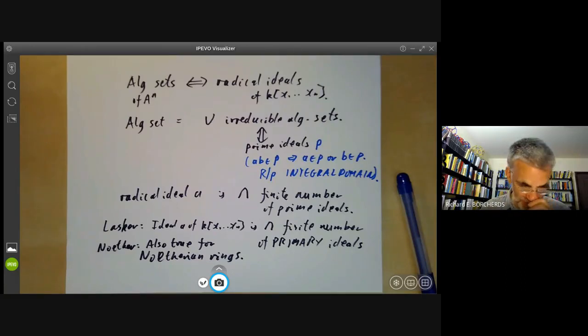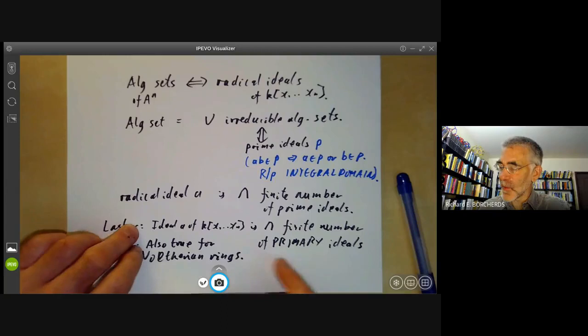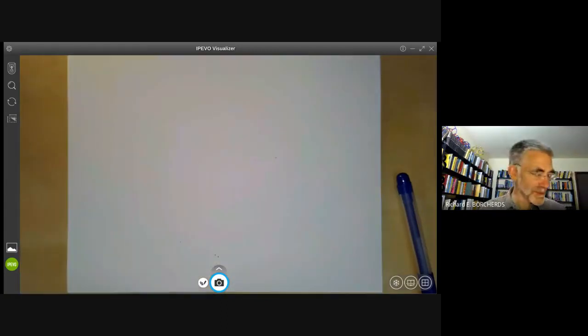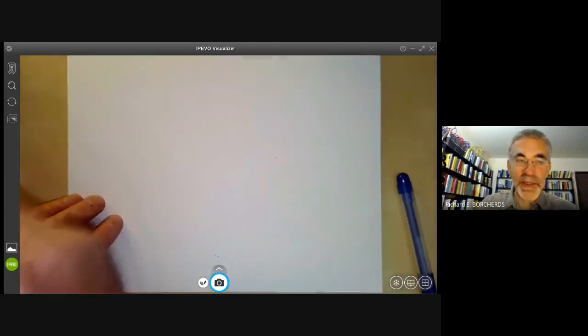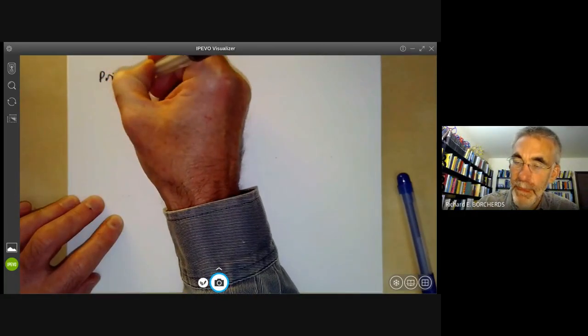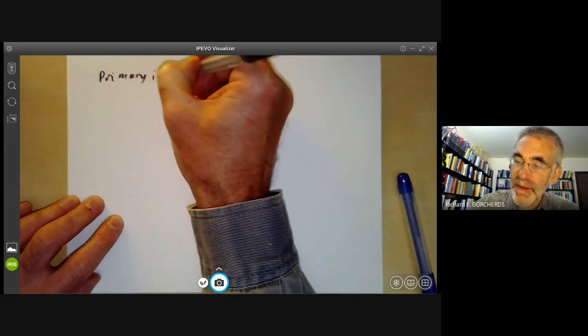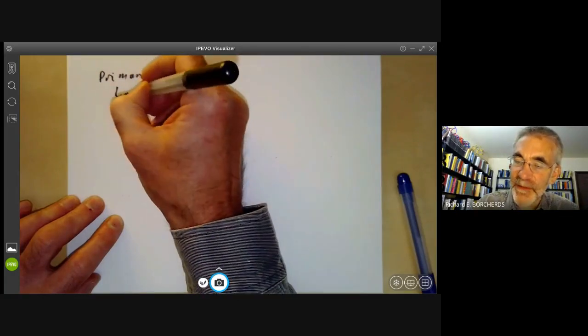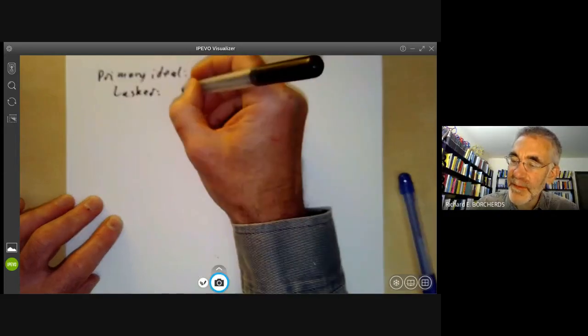Anyway, we now need to explain what a primary ideal is. So a primary ideal has two different definitions. First, we have Lasker's original definition, which says that an ideal p of a ring R is primary.